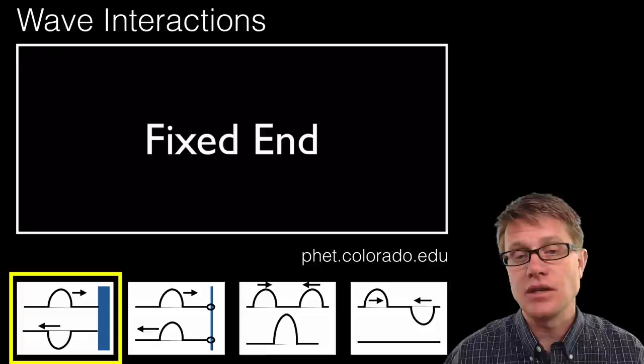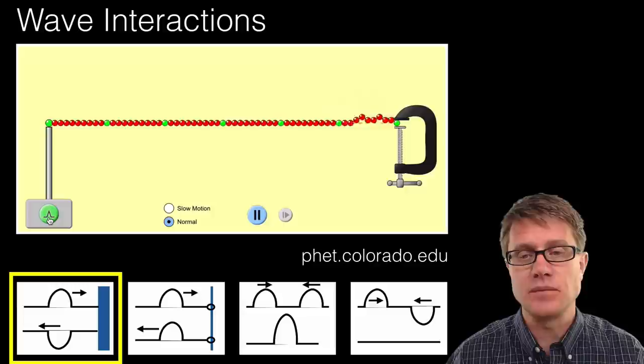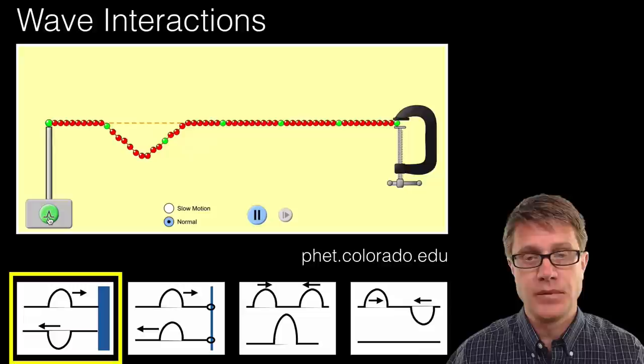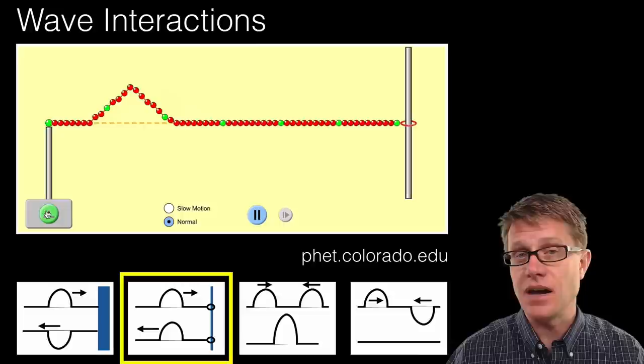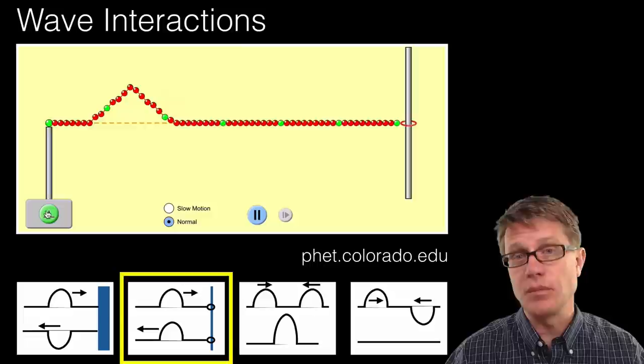And so let us look at this using a PHET simulation. Let us start with a fixed end. So remember if it goes into a fixed end watch what happens. As it comes back it is inverted. So it went down on the top and it came back on the bottom. Watch what happens if we now change that from a wave interaction where we have a free end. So it has the ability to move up and down. It comes back on the same side. And so again it depends on what we are hitting as to how we come back. But we are coming back. We are being reflected.